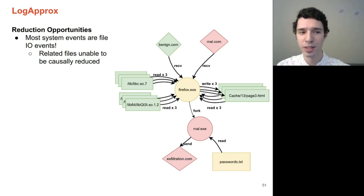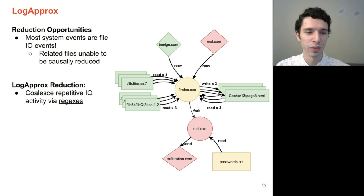A lot of methods currently rely on causally collapsing multiple reads and multiple writes into a single IO operation. However, they're unable to do so for semantically similar files as they are distinct. Our goal of LogApprox is to approximate these semantically singular files under a single regex and thus be able to causally collapse many of these reads and writes into singular IO operations.